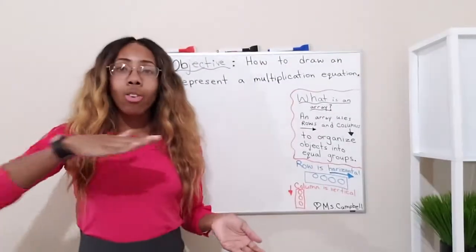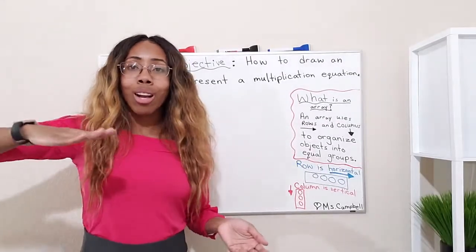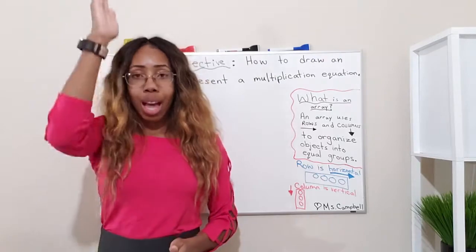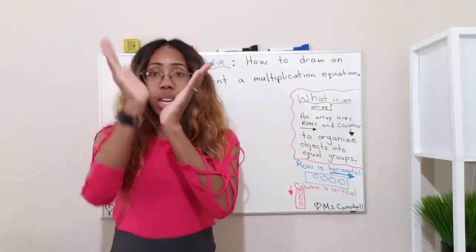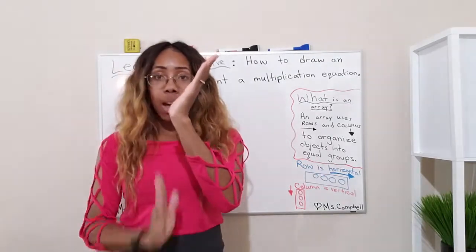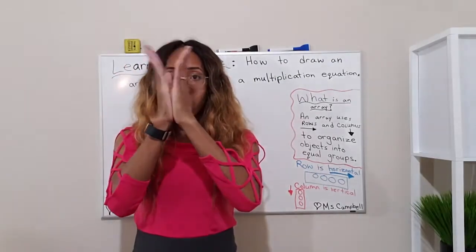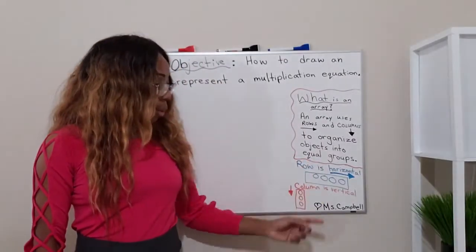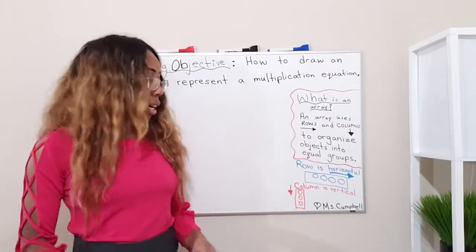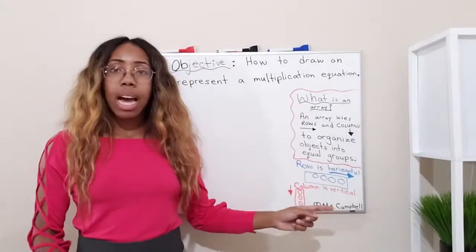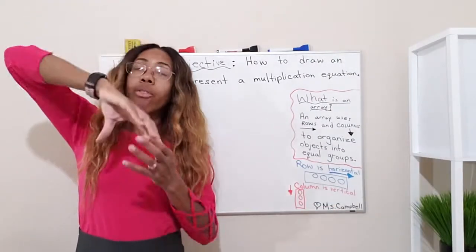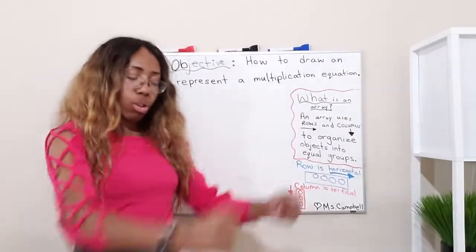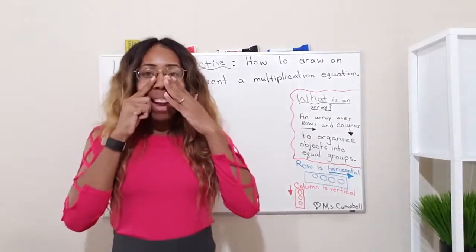A row is horizontal — it's going horizontal, like you're rowing the boat. And a column is a vertical line, going up and down. Think of big tall columns right in front of a big building. Column is vertical, up and down. Row is horizontal — you're rowing the boat.